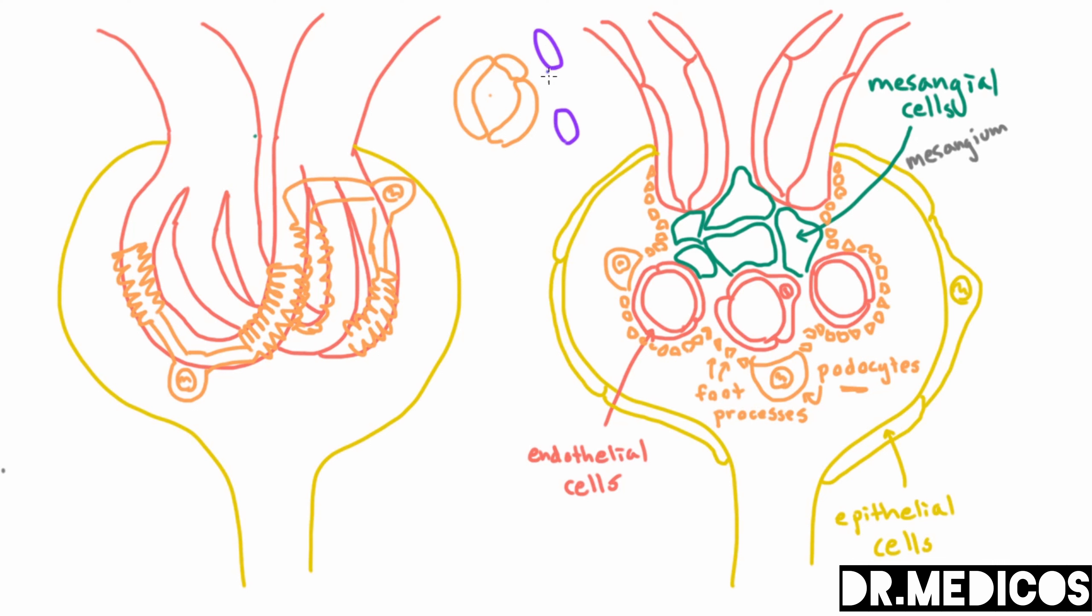Out here you might have some other cells, but one thing you always have out here is what we call the basement membrane. And so that's this thing that's a lot of protein, a lot of collagen, and it sits underneath these epithelial cells. So anytime you have epithelial cells you will see this thing called a basement membrane.